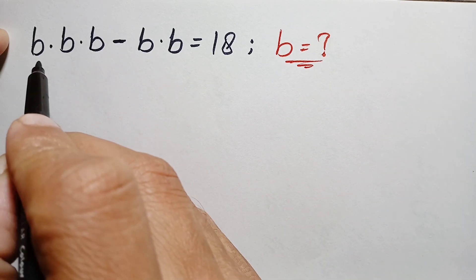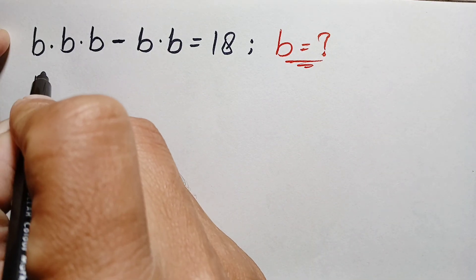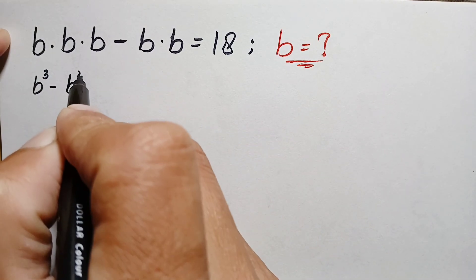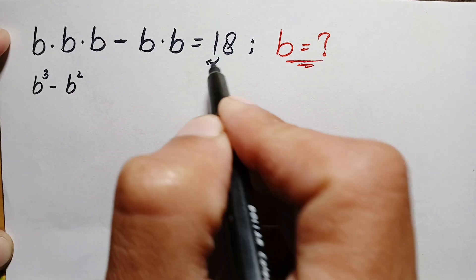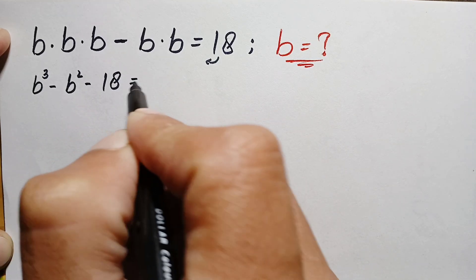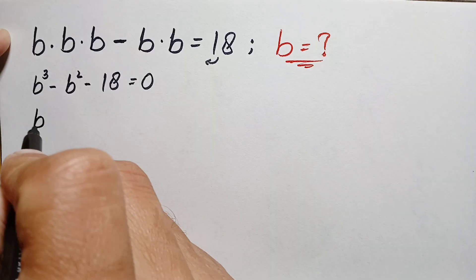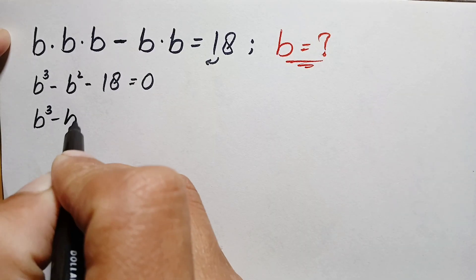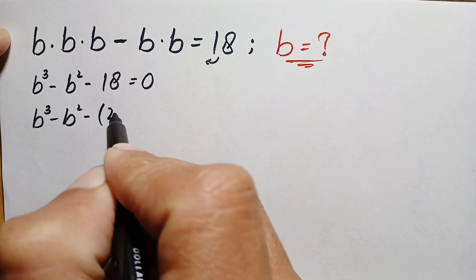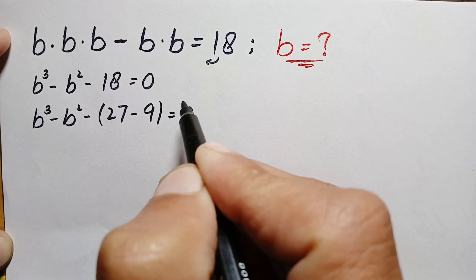On the left-hand side, b appears three times, so we can write this as b cubed minus b squared. We take 18 to the left-hand side, giving b cubed minus b squared minus 18 equals 0. We can rewrite 18 as 27 minus 9, so this becomes b cubed minus b squared minus 27 plus 9 equals 0.